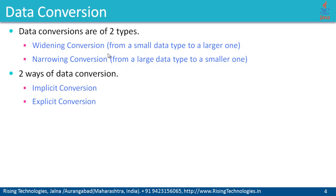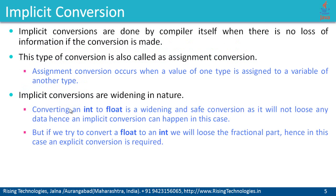Widening conversion tends to go from a smaller data type to a larger one, whereas narrowing conversion tends to go from a large data type to a smaller data type. There are two ways to perform these conversions: one is implicit conversion and another is explicit conversion.